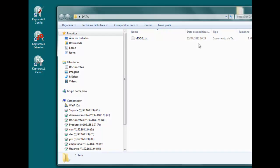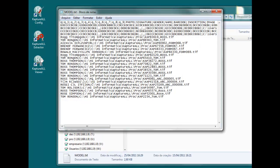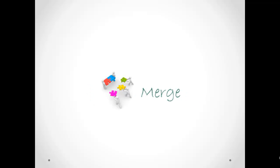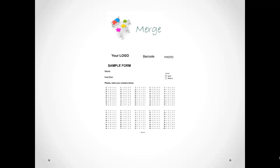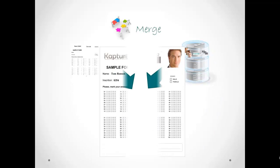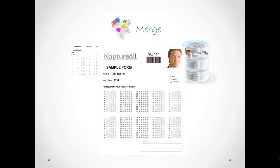Once users are aware of these potential mistakes, they are able to either edit or validate them. At the end of the stage, all information will be successfully stored in the same output database. CaptureAll also has two additional modules to facilitate the process: the CaptureAll Merge module merges the images of the forms with information from the database, generating customizable forms ready for printing.